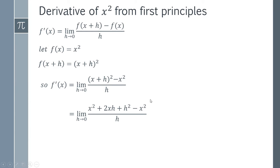You should immediately be noticing a cancellation, which is that this x squared and this x squared are going to cancel out, so it actually simplifies to this expression.